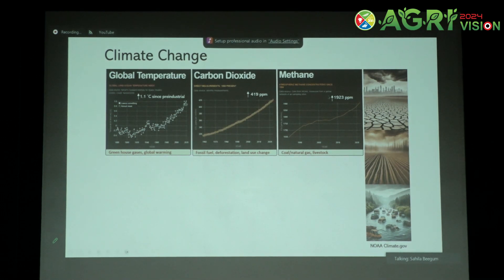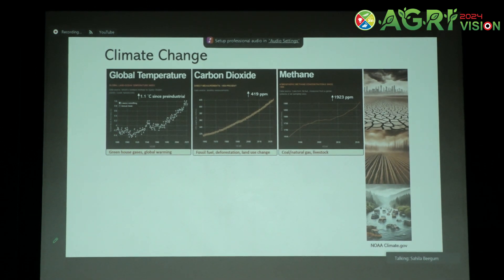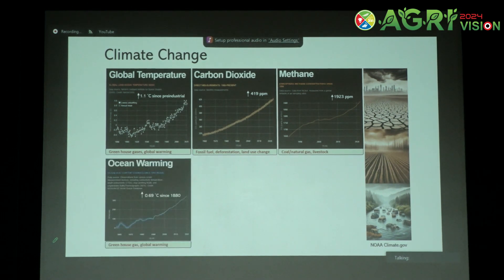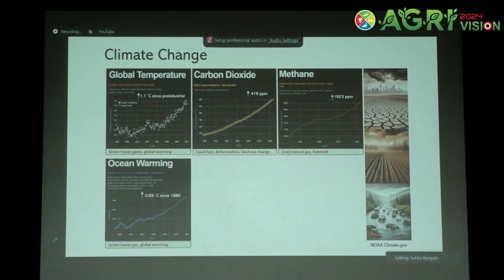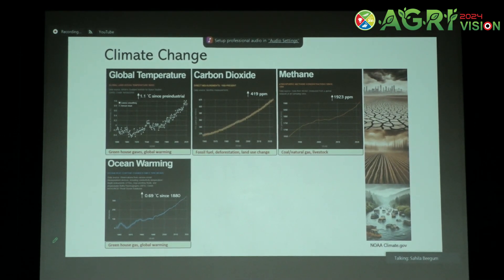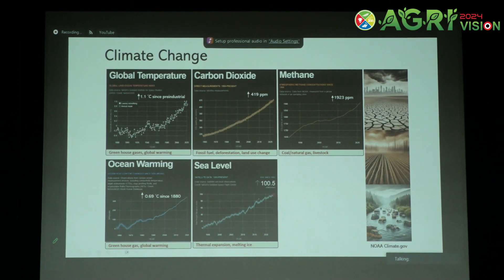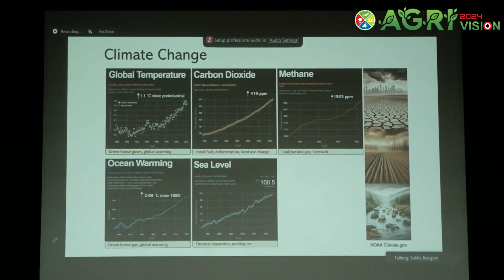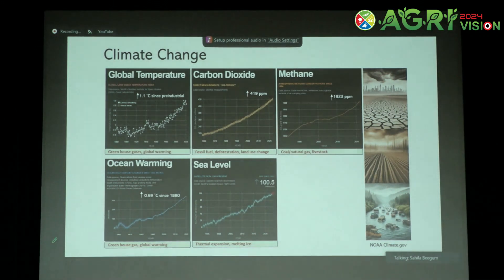If you look at the methane concentration, it has risen to 1923 ppb in 2022, mainly due to the increase in production and transport of coal and natural gas, and also due to livestock. With the increase in global temperature, there is also an increase in ocean warming. Since 1880, there is an increase of 0.69 degree Celsius in ocean temperature. As the temperature in the ocean increases, there is also an increase in sea level rise. This data from 1993 to present shows an overall increase of 100 millimetres, due mainly to thermal expansion and the melting of ice.